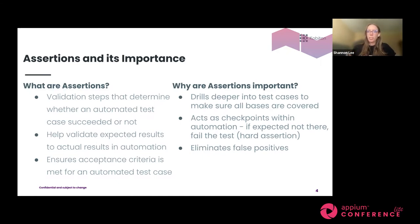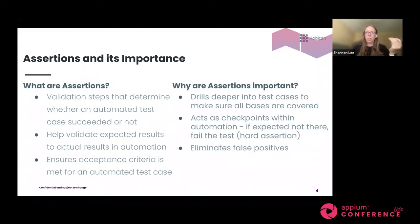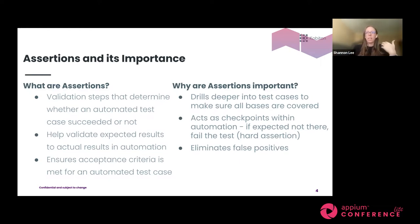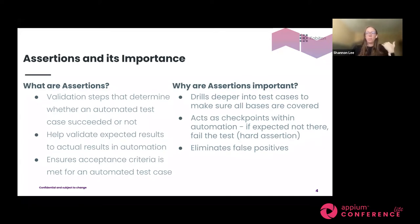Why are assertions important? From a programmatic approach, they drill deeper into your test case to make sure all bases are covered. They act as checkpoints within automation — if the expected result isn't there, fail the test. That's a hard assertion. They also help eliminate false positives: if you're running an automation test without assertions, a passing result may not be a true pass. Assertions, when implemented within your script, help ensure that a pass is a genuine pass.